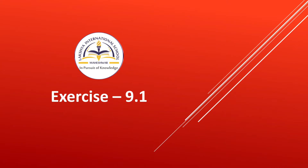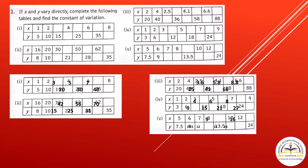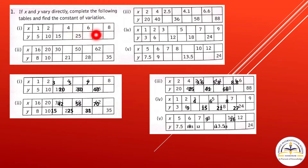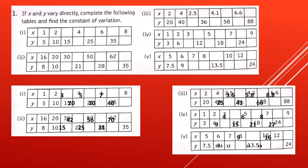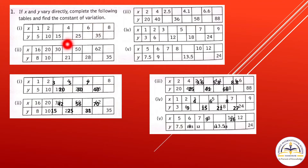On the basis of this concept we will solve Exercise 9.1. Question 1: If x and y vary directly, complete the following tables and find the constant of variation. For the first table, x values are 1, 2, blank, 4, blank, 6 — so the blanks are 3 and 5. The y values are 5, 10, 15, 20, 25, 30, 35, and 40.